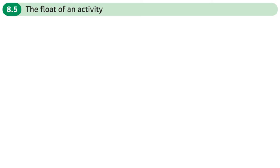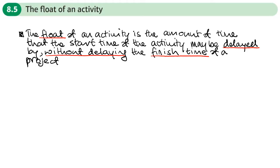This is the fifth section of chapter eight on critical path analysis, and this section is about how to find the float of an activity. The float of an activity is the amount of time that the start time of the activity may be delayed without delaying the finish time of our project.